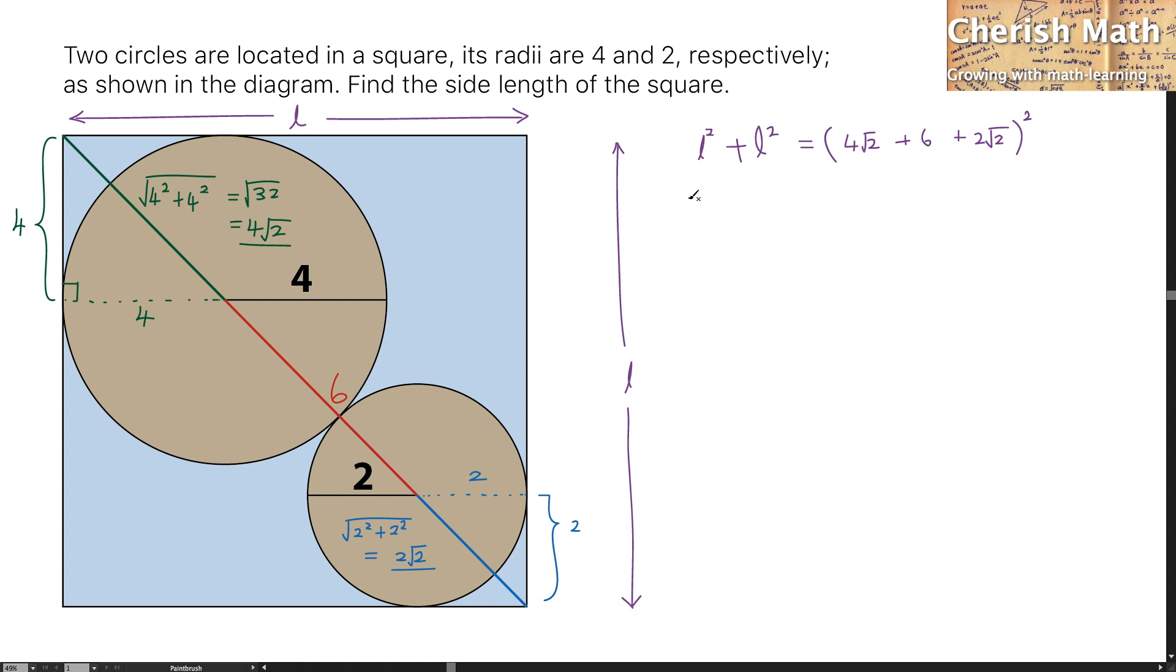To sum up the left and right parts of this equation, that is going to be 2L squared equals 6 times the square root of 2 plus 6, squared.